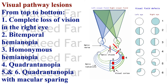A lesion at the optic chiasm — for example, tumors of the pituitary gland — affects the crossing fibers, which are from the nasal retina of both eyes. This results in affection of both temporal (lateral) fields, called bitemporal hemianopia.